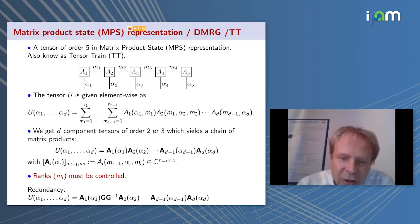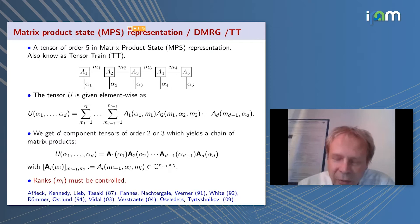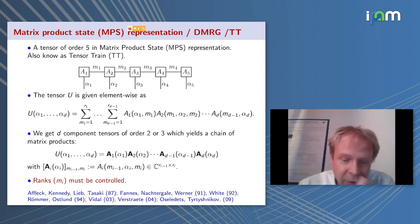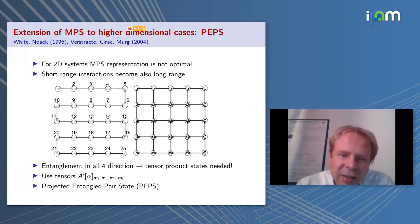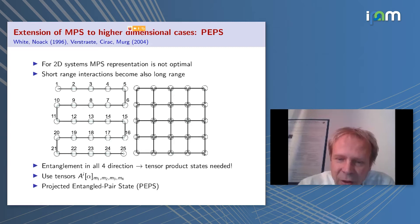This MPS framework was introduced by Steve White from the DMRG community, also connected to the AKLT model and work by Fannes, Verstraete, and mathematicians like Oseledets. Early attempts in 1996 extended these ideas to 2D using a snake-like version by White and Noack. The natural extension to 2D is PEPS, which captures the correlation and entanglement structure in a much better way for a 2D lattice.